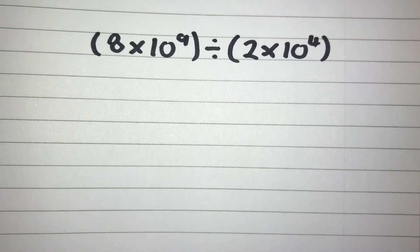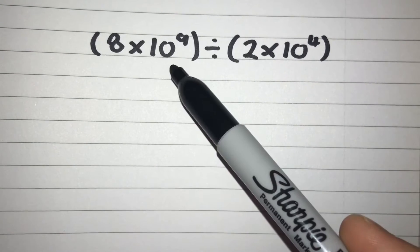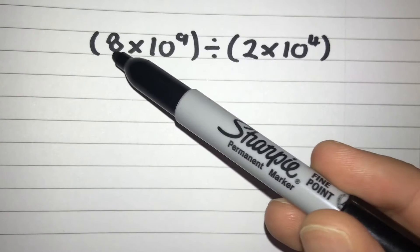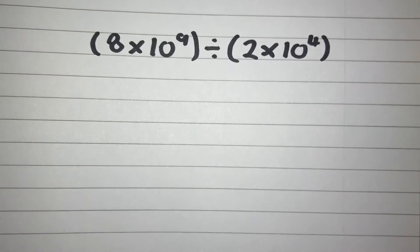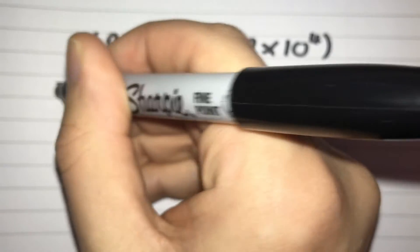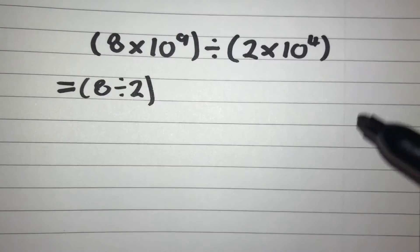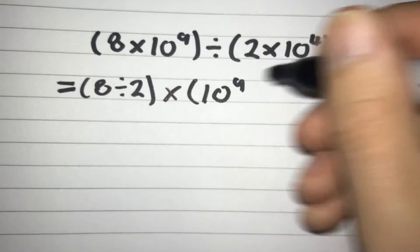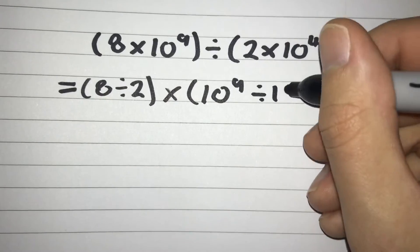So for this first example, if we have 8 times 10 to the power of 9 divided by 2 times 10 to the power of 4, what we can do is rearrange this calculation. We can put our two numbers that are out the front together and we can put our two powers of 10 together. So we have 8 divided by 2 multiplied by 10 to the power of 9 divided by 10 to the power of 4.